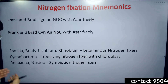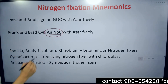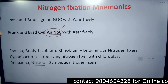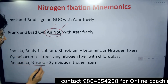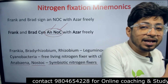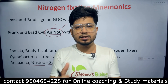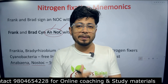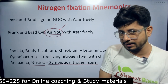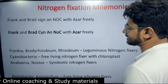Next comes 'an NOC'. From this segment, A-N gives us Anabaena, and NOC gives us Nostoc. Both Anabaena and Nostoc are symbiotic nitrogen fixers, meaning these organisms live alongside other plants in symbiosis. The plant gets benefit from Anabaena and Nostoc, and in turn Anabaena and Nostoc use the plant as their home to fix nitrogen.